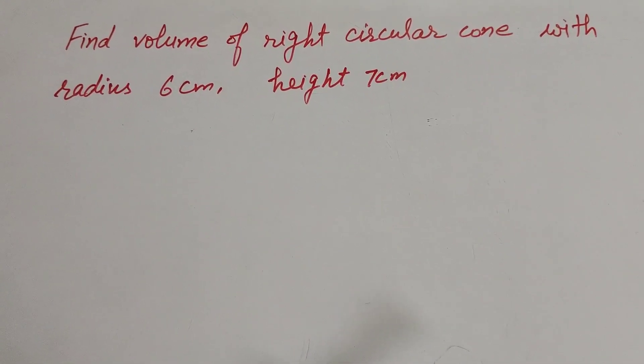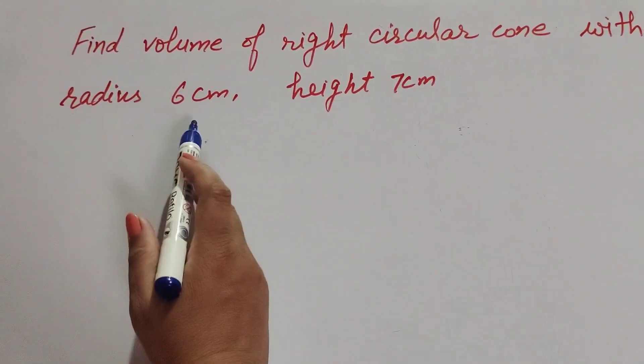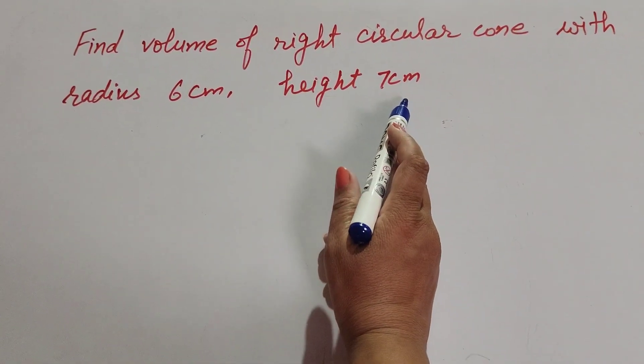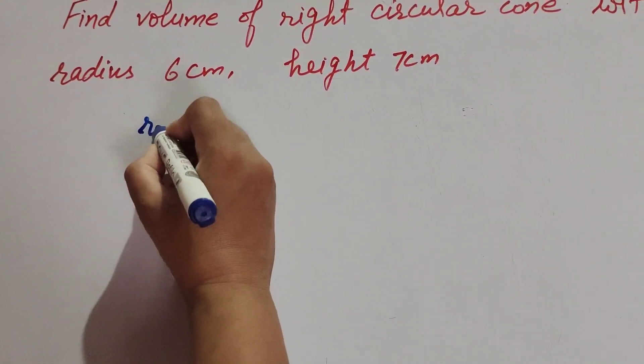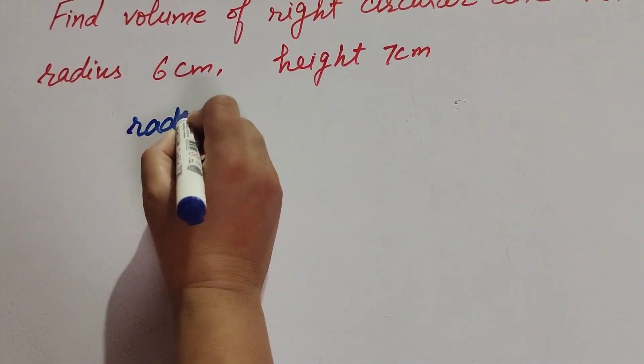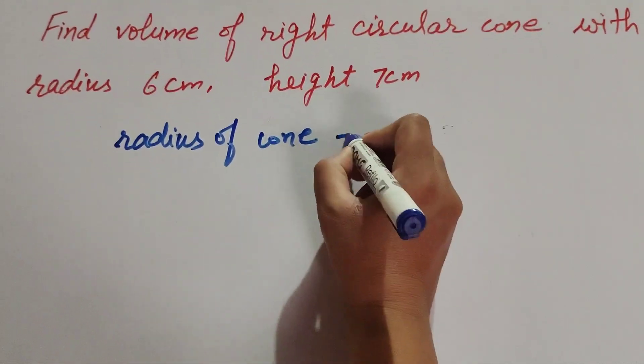Hello friends, welcome to my channel. In this video, we'll find the volume of a right circular cone with radius 6 centimeters and height 7 centimeters. The given information is: radius of cone